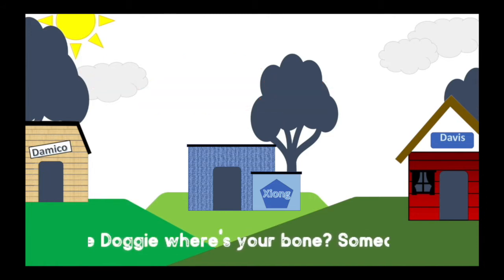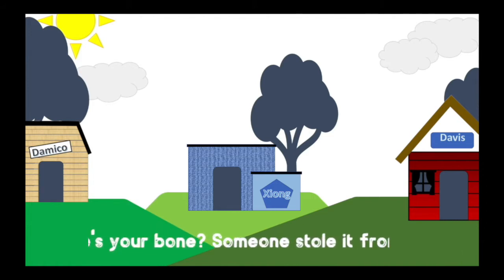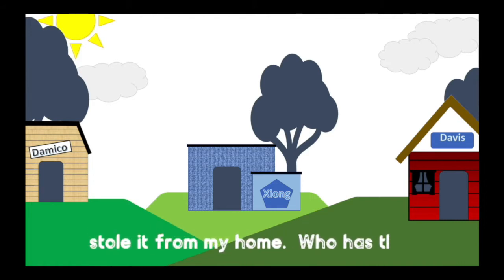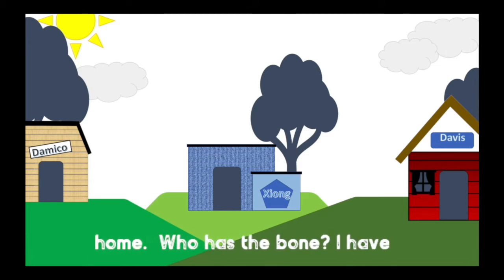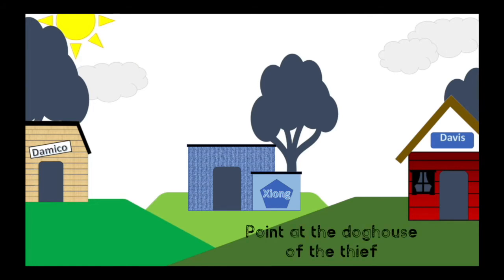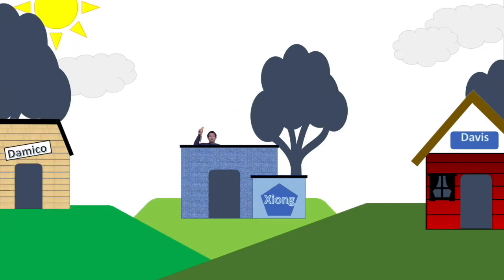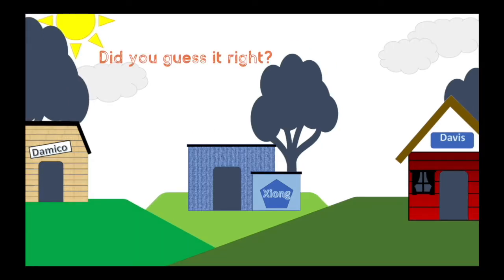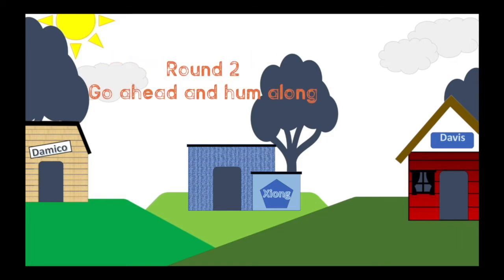Doggy Doggy, where's your bone? Someone stole it from my home. Who has the bone? I have the bone. Hmm, did you figure out who did it? Point to the doghouse that belongs to the thief. I have the bone. Did you guess it right? Point. Round two.